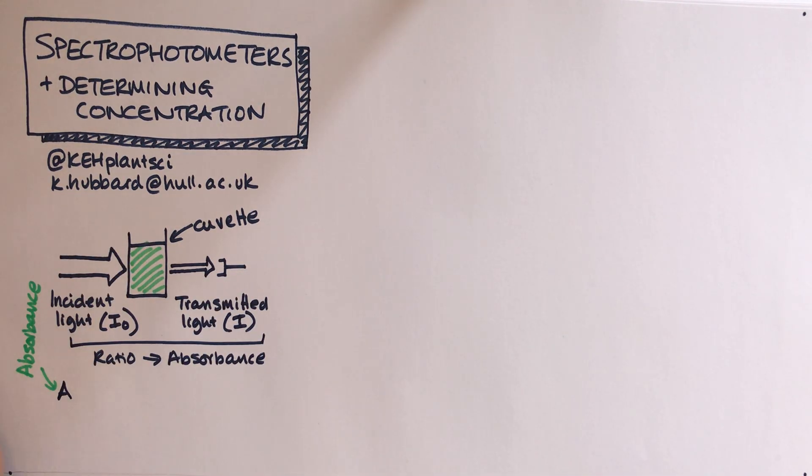The machine is comparing the light that goes in with the light that comes out and it gives you an absorbance value which it calculates in this way. Absorbance A is calculated as the log to base 10 of the incident light divided by the transmitted light, which is I.